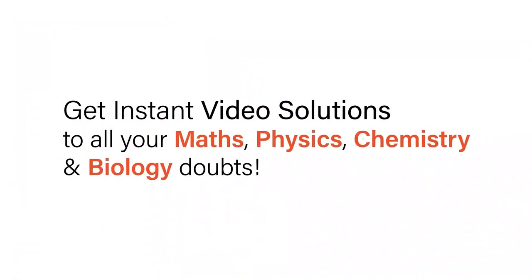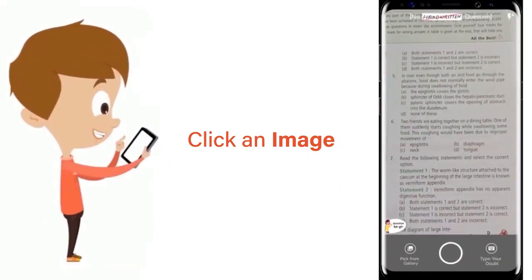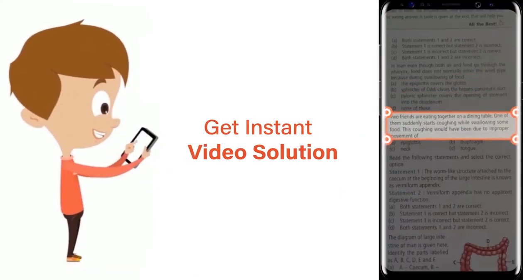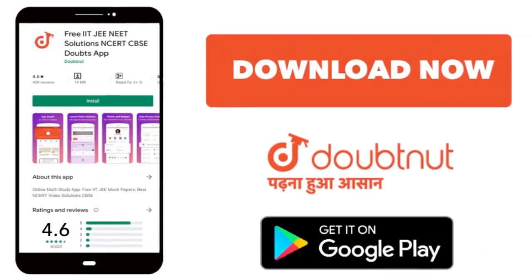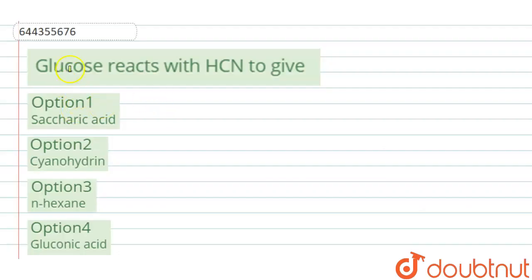With Doubtnut, get instant video solutions to all your maths, physics, chemistry and biology doubts. Just click the image of the question, crop the question, and get instant video solution. Download Doubtnut app today. The question is: glucose reacts with HCN to give...